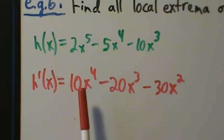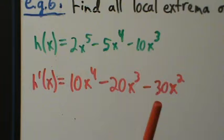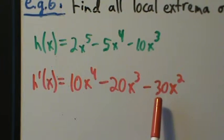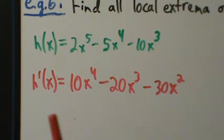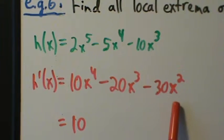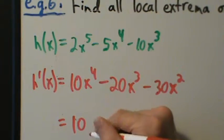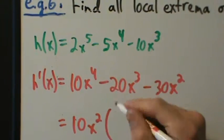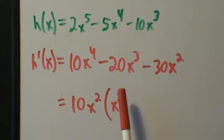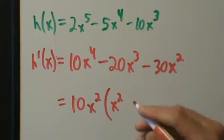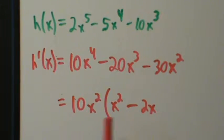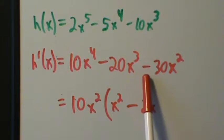So there are no values of x that make this undefined. Now we just want to figure out where it's 0. Notice that 10, 20, and 30 share a common factor of 10, and x to the 4th, x to the 3rd, x squared share a common factor of x squared. So pulling out 10x squared gives us 10x squared times the quantity x squared minus 2x minus 3.